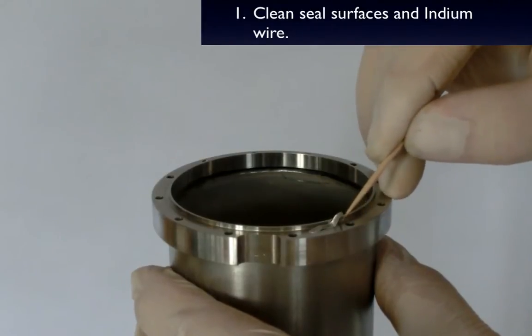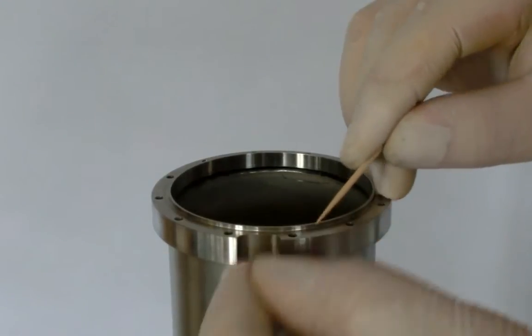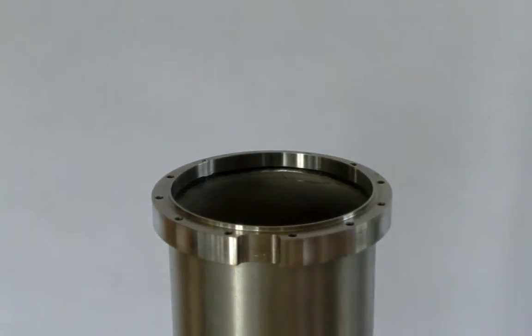Remove any indium that's stuck to the seal flanges with a cocktail stick or wooden spatula. Then polish any residue with a silver polishing pad.